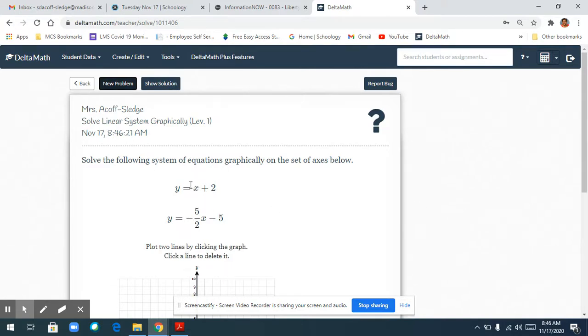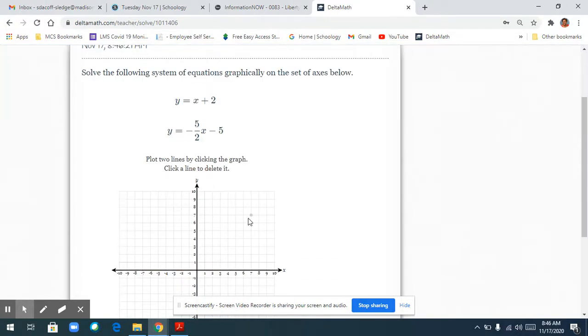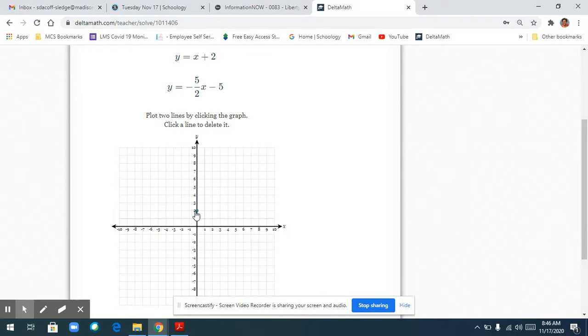This slope is positive 1, so you're going to go up 1 and then to the right 1. Let me go ahead and graph them. My y-intercept is 2. My slope is 1, so I'm going to go up 1 and over 1 and click, and I expected a positive slope. This one, I expect a negative slope, so it should be leaning back.